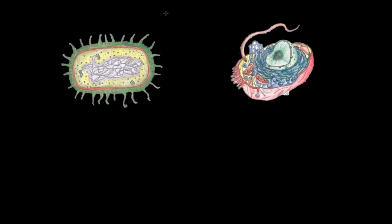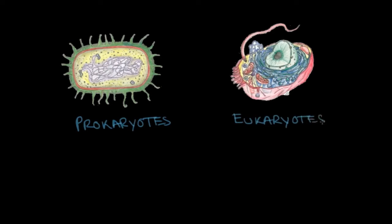The first thing I want to talk about is something that medical students have to deal with all the time, especially in anatomy: word origin. I want to go over the origins of the words prokaryotes and eukaryotes, and I believe this will help you understand the main characteristics and main differences between these two types of cells. The first word is 'karyos,' which has a Greek origin and means kernel. In biology, we use this word root to refer to the nucleus of a cell.